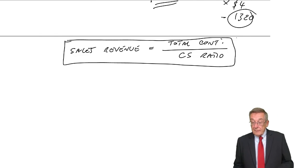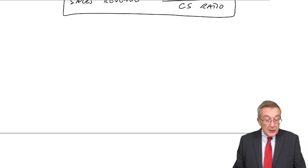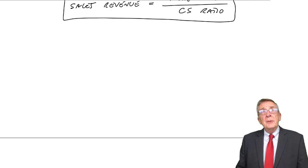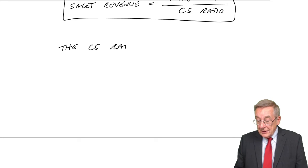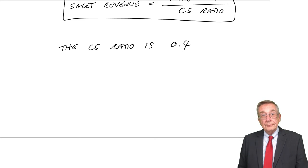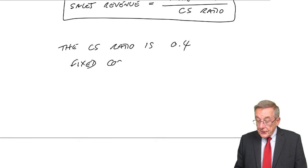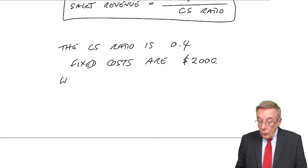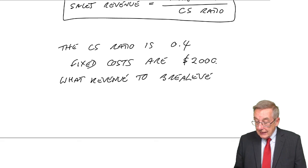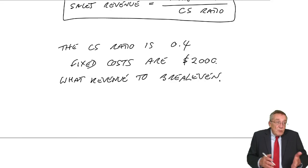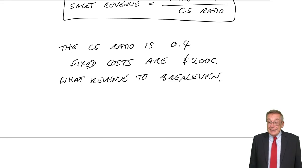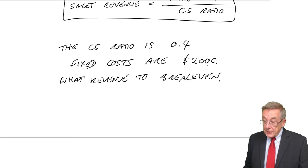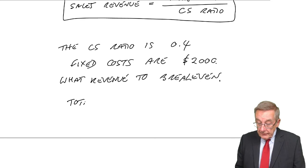Let me give you just one more example. It's not in the notes. I'll make it up. Suppose I tell you the CS ratio for our product is 0.4. Fixed costs are $2,000. What revenue is needed to break even? Now, here, of course, you don't know selling price per unit. You don't know costs per unit. But I do know this, do I not? That if the fixed costs are $2,000, to break even, we need total contribution. It must be $2,000, it must be equal to the fixed costs.